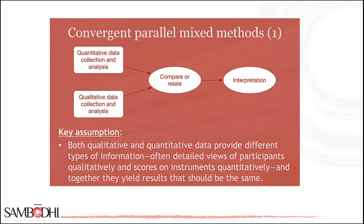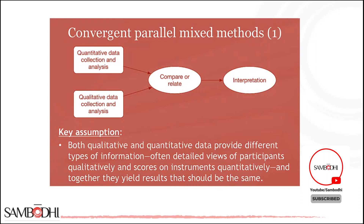In your research on cycling safety in Amsterdam, you undertake both sides of your research simultaneously. On the qualitative side, you analyze cyclist complaints via the city's database and on social media to find out which areas are perceived as dangerous and why.